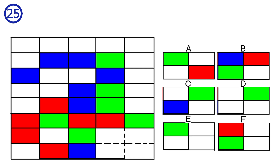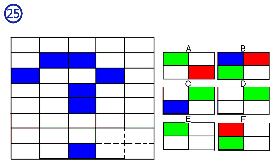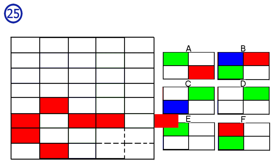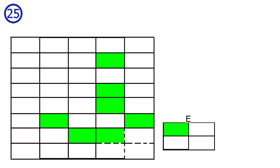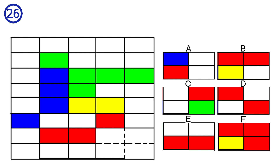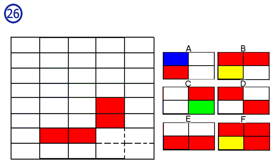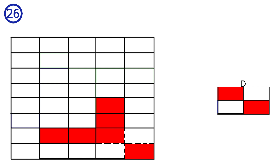Puzzle 25. Same concept with shapes, but this time they're rotated. We have a blue shape and a red shape — the red shape has one tile outside of the grid. We have a green incomplete shape, which we complete, matching answer E. Puzzle 26 is the exact same concept: green shape, blue shape, and incomplete red shape. We complete it, matching answer D. Answer D is correct.